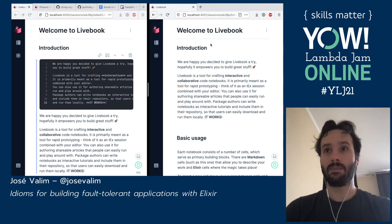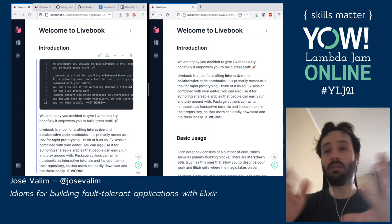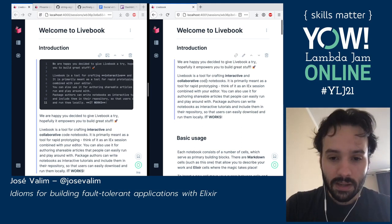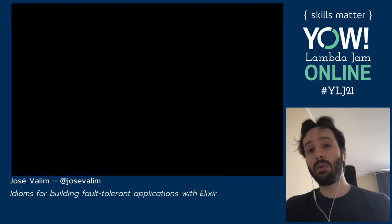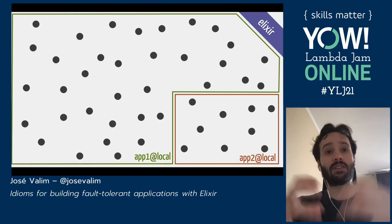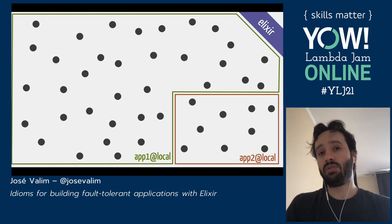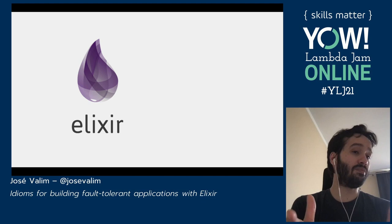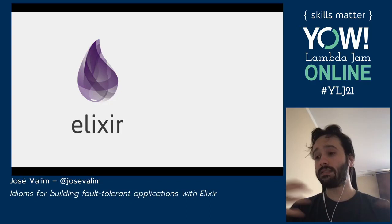So distribution comes for free with all of that, and we can leverage it to build really collaborative, interactive applications — as Livebook is an example of. So we talked about all those new words, and we saw an actual example in Livebook of how we can leverage that in practice to build something collaborative that works in a cluster with as little effort as possible, because it's just using message passing.